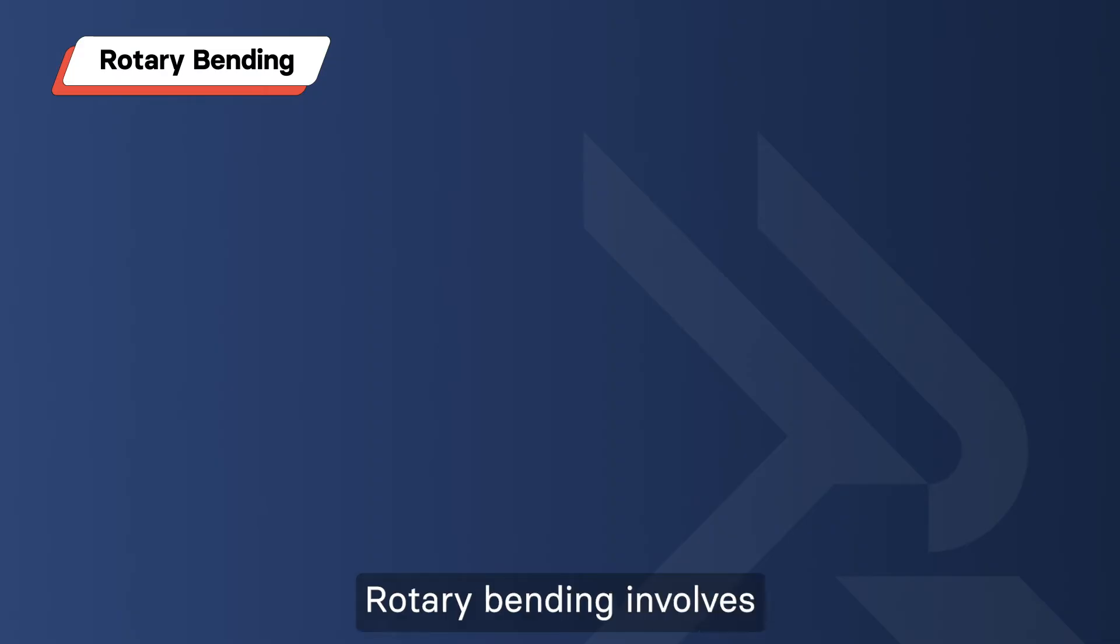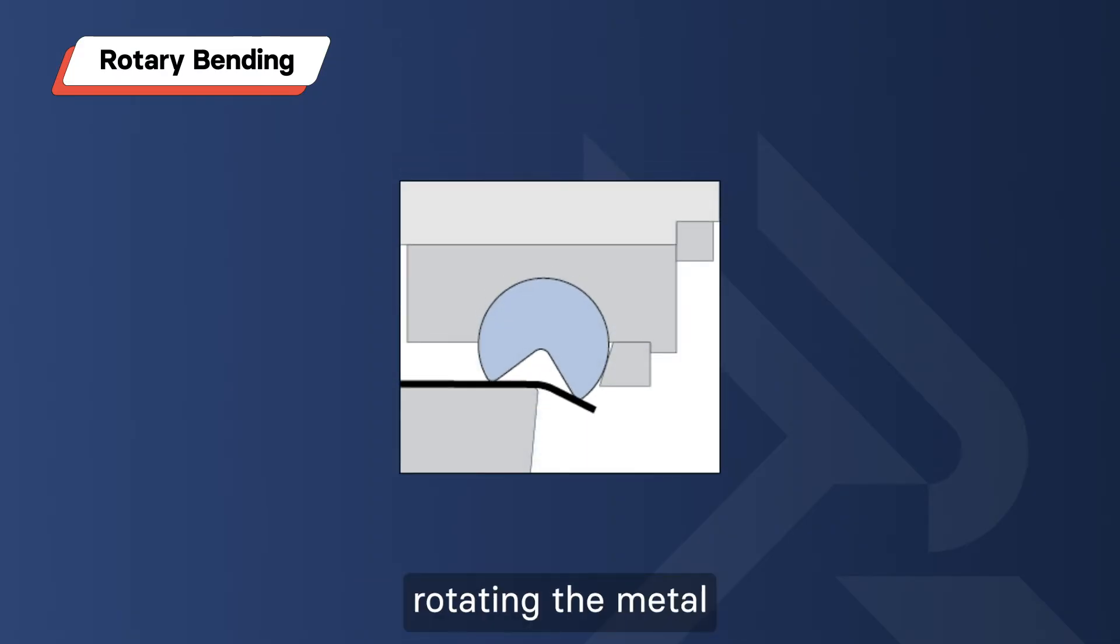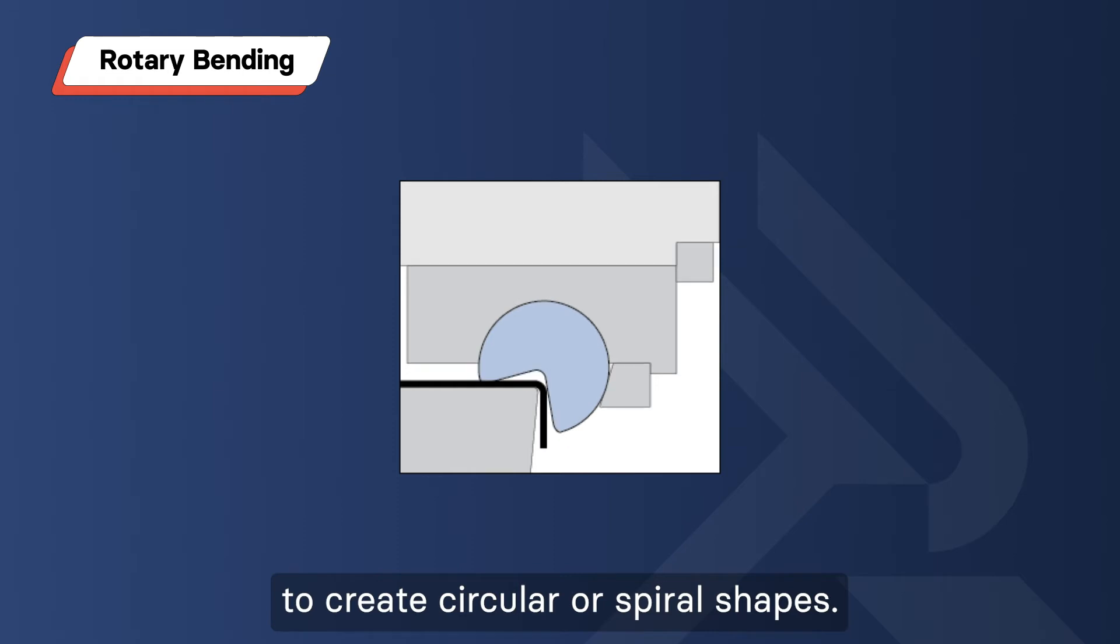Rotary Bending involves rotating the metal around a central axis to create circular or spiral shapes.